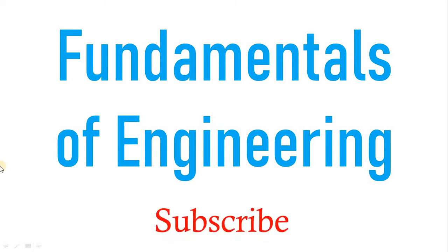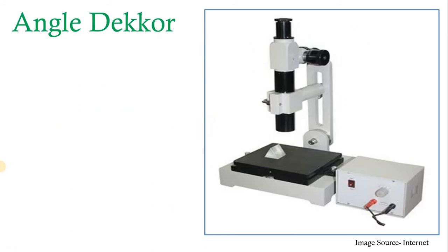Welcome to Fundamentals of Engineering. Today we are going to see another angle measuring instrument called the angle decker. As an introduction to angular measurements: no absolute standard is required for angular measurement. The measurement is done in degrees, minutes, and seconds. The measurement of angular and circular divisions is an important part of inspection, concerned with individual angles, angular changes, and reflections on components, gauges, and tools.